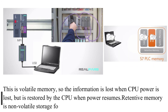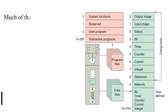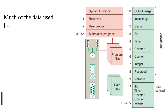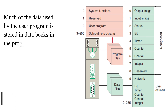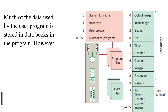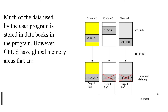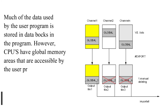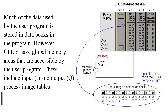Retentive memory is non-volatile storage for a limited amount of work memory information. Much of the data used by the user program is stored in data blocks in the program. However, CPUs have global memory areas that are accessible by the user program. These include input (I) and output (Q) process image tables and bit memory (M).